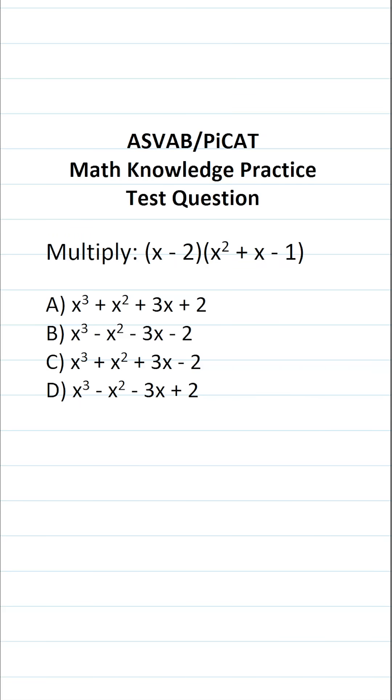This math knowledge practice test question for the ASVAB and PiCAT says multiply x minus 2 and x squared plus x minus 1. In other words, we're going to be multiplying these two polynomials together.